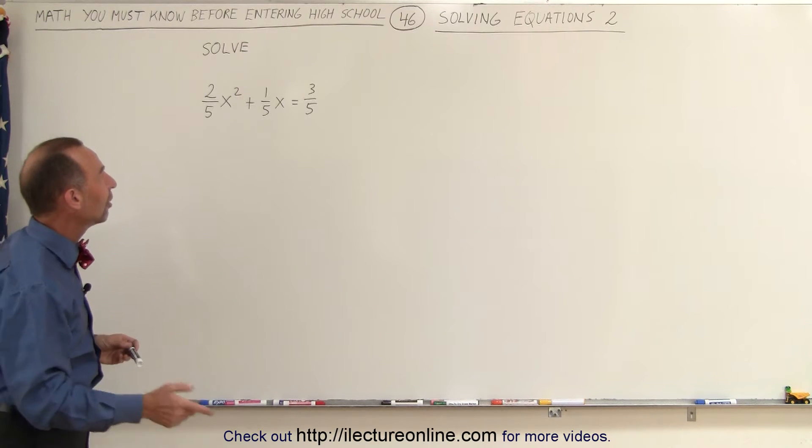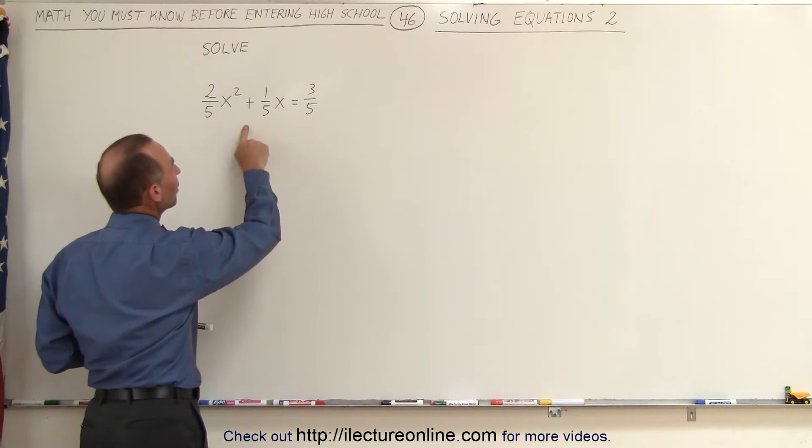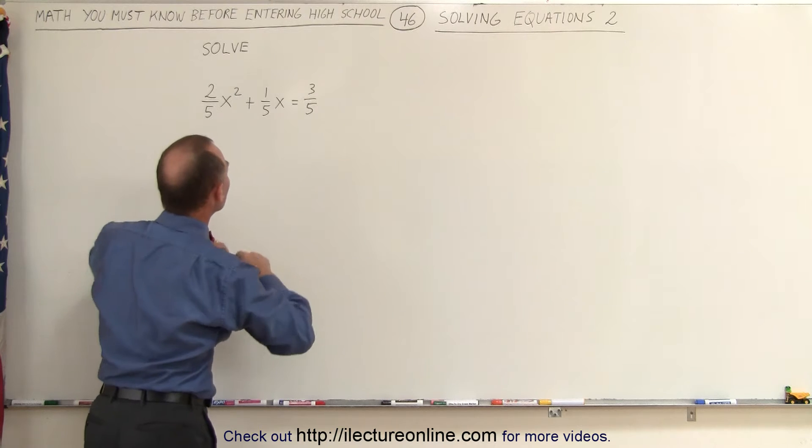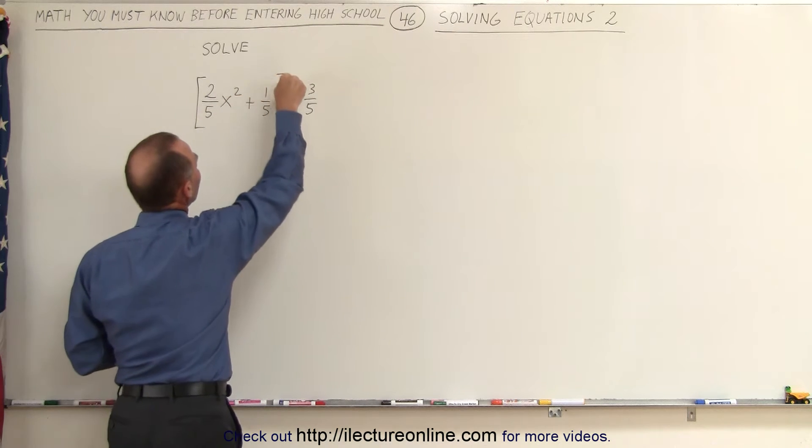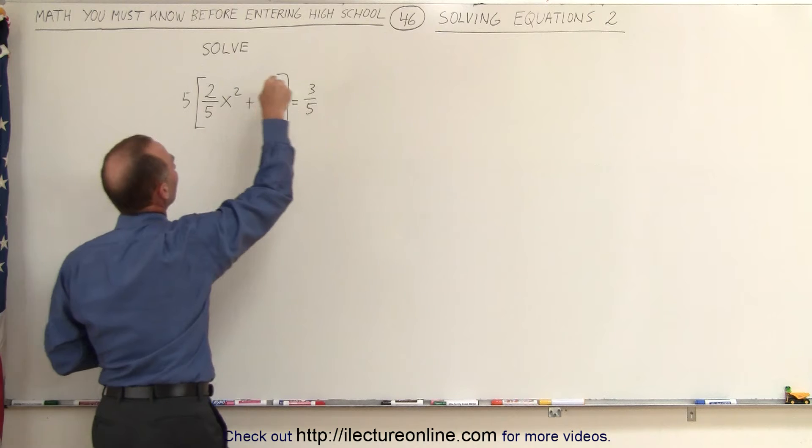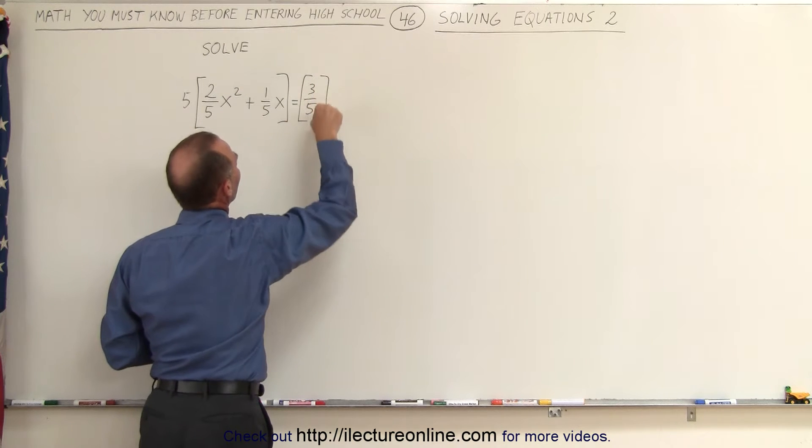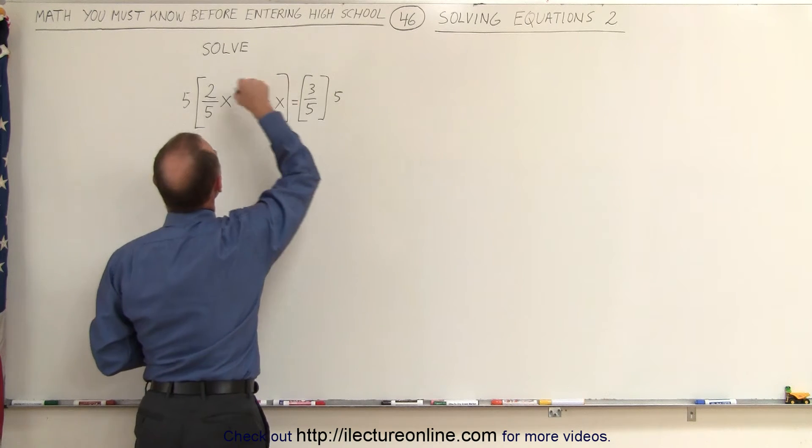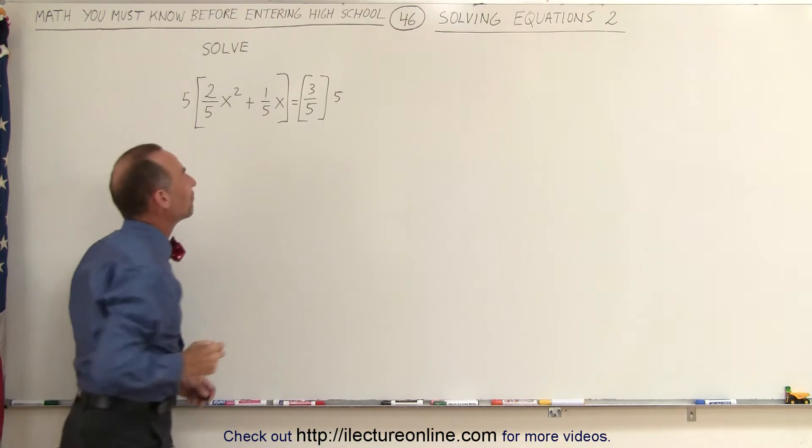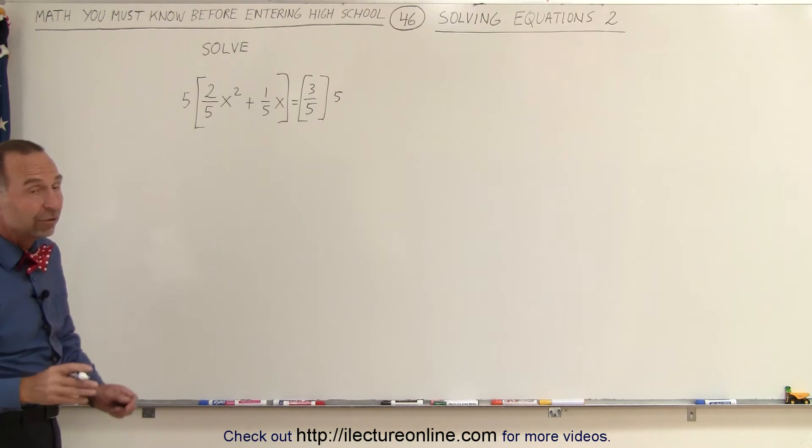So in this case, we're going to get rid of the fractions by multiplying both sides of the equation by the denominator. In this case, the denominator is 5, so we'll multiply the left side by 5 and we multiply the right side by 5. By doing that, we will get rid of the fractions. All right, so let's go ahead and do that.